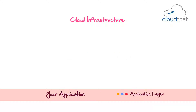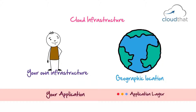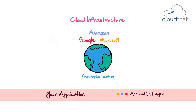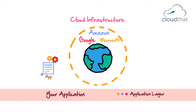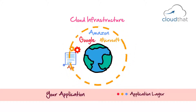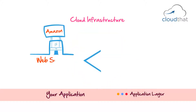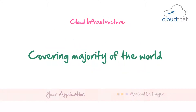A drawback at the application layer was being tightly coupled to your geographic location when using your own infrastructure. But most cloud providers have data centers all over the world to serve users in different geographic locations. You can use any of these geographic regions, and it is not difficult to move applications from one region to another. Amazon Web Services, for example, has infrastructure in North and South America, Europe, and Asia, covering the majority of the world.